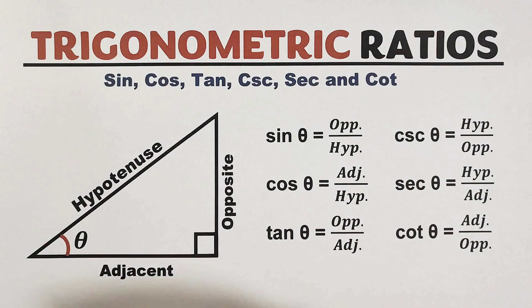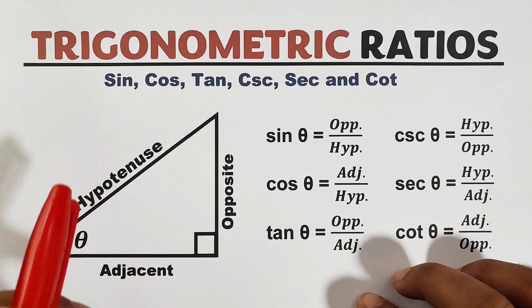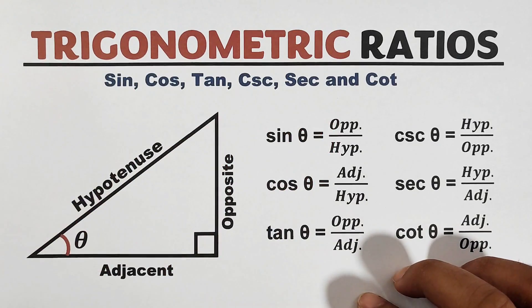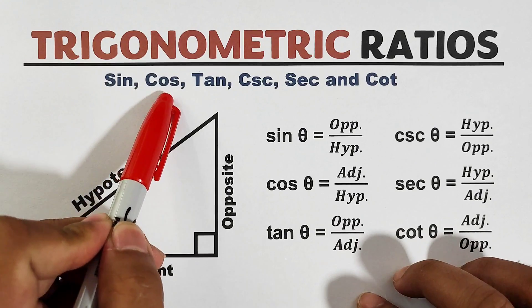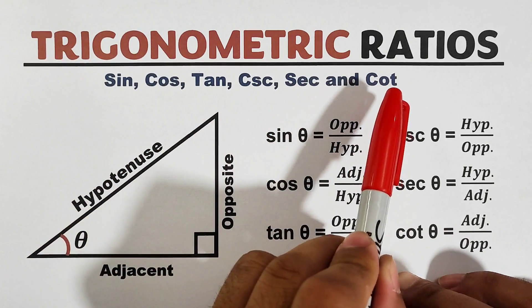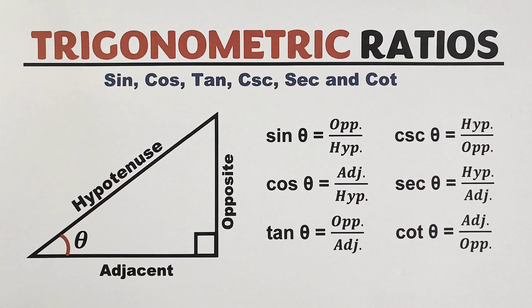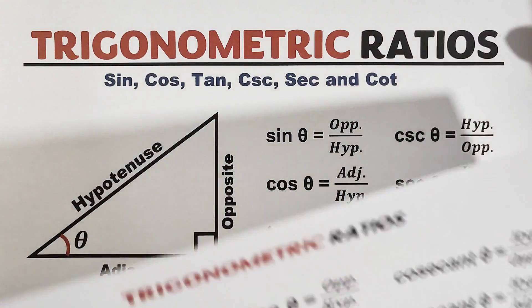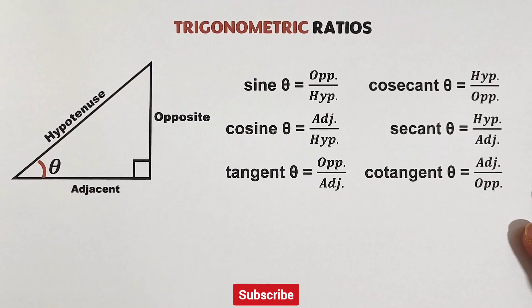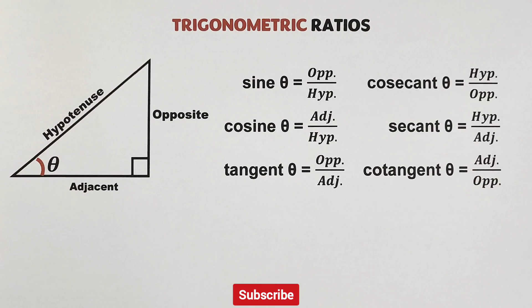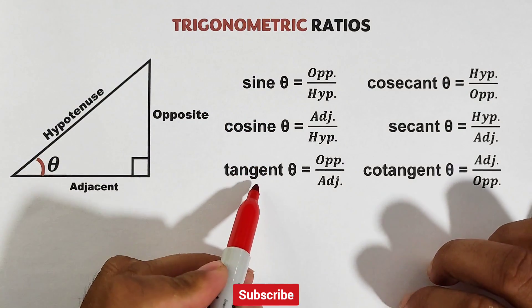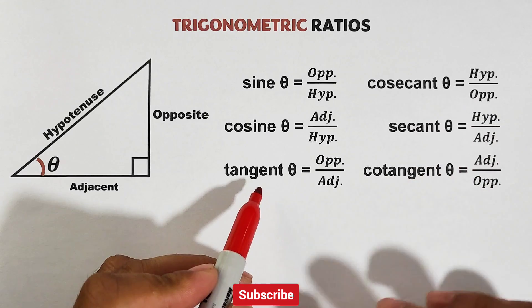Hi guys, it's me Teacher Gon. Today's video we will talk about the six trigonometric ratios. In trigonometry we have the sine, cosine, tangent, cosecant, secant, and cotangent. So without further ado, let's do this topic. Let me give you the different six trigonometric ratios of a right triangle.